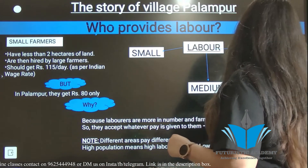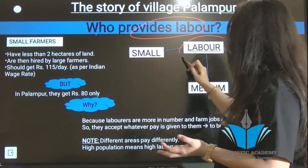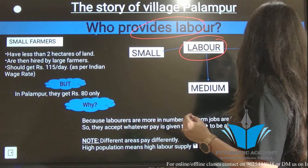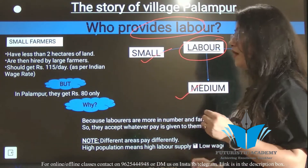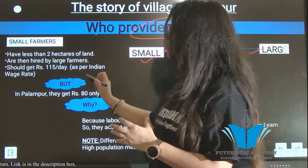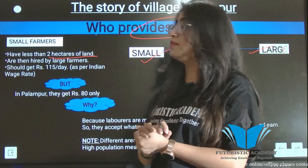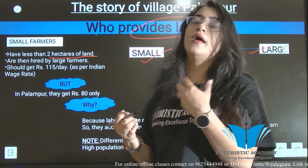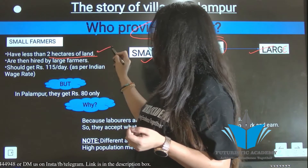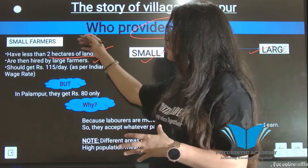Now let's look at who provides labor in Palampur. There were three types of farmers: large farmers, medium farmers, and small farmers. Small farmers had less than 2 hectares of land, or were landless. Since their land was insufficient, small and landless farmers were hired by large farmers to work on their fields.